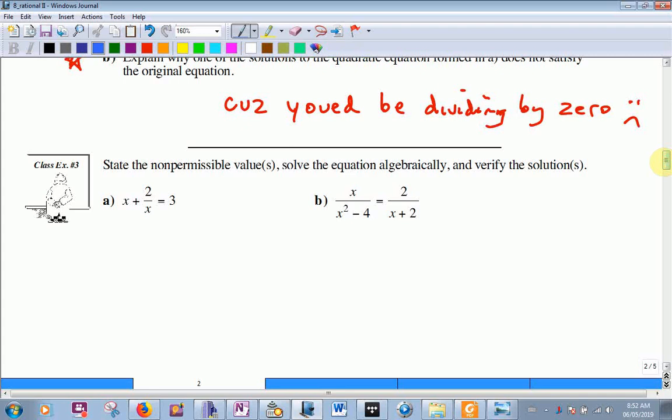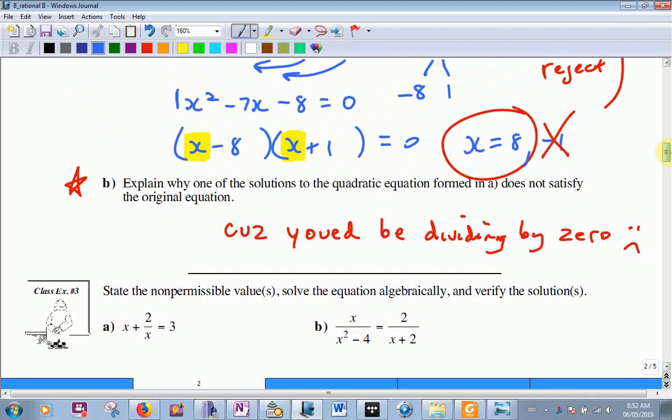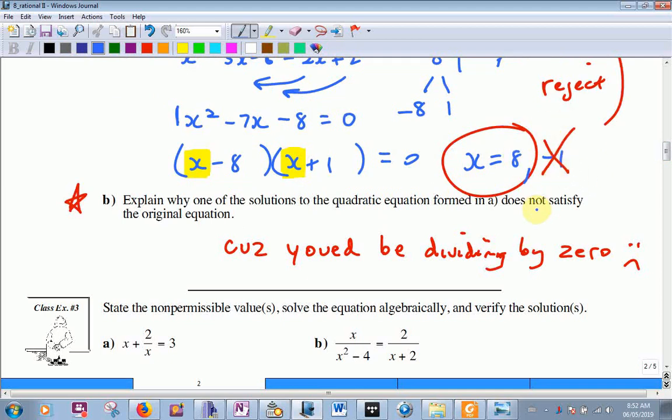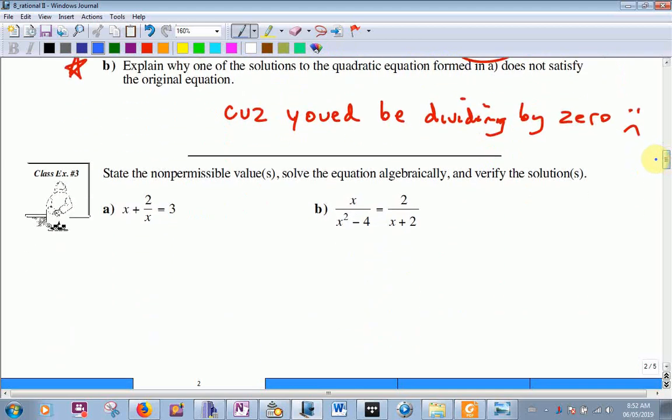A couple more. And there was one like that on the worksheet I gave you last day. So, when you looked in the bottom, got a couple questions already. I don't see an answer with 2. Yeah, that's why. Because you can't do one of them. State the non-permissible. x can't be 0. Then I'll have 2 divided by 0, and we can't do that. Can I cross-multiply this guy? Would you want to add these guys first so you can cross and multiply? You can if you want. But I'm just going to multiply everything by... What's the lowest common denominator? x.